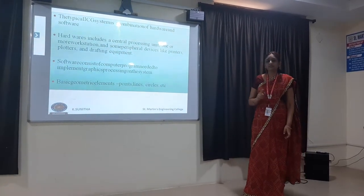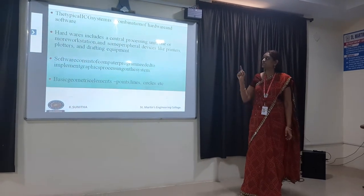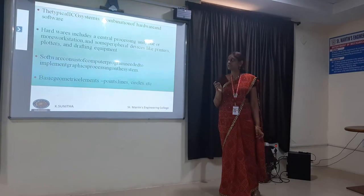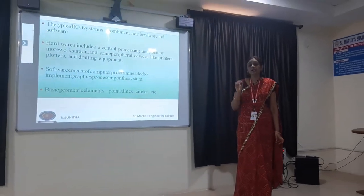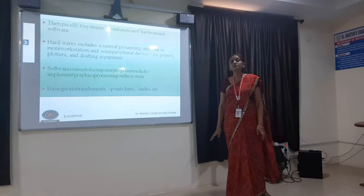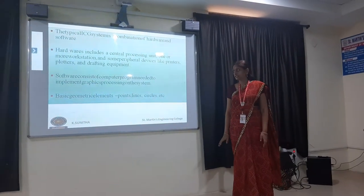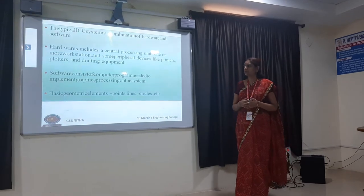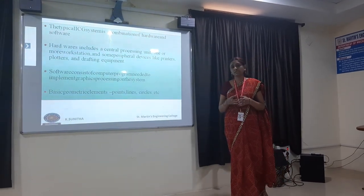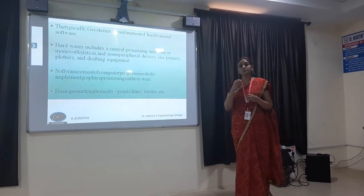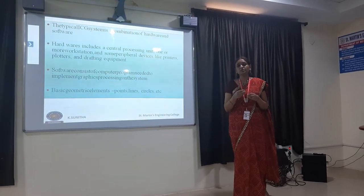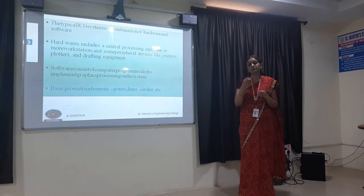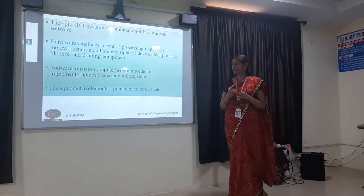The hardware includes the central processing unit, one or more workstations, and also some peripheral devices like printers, plotters and other drafting equipment. Software consists of computer programs to implement graphics processing. We use software like AutoCAD, ProE, ANSYS, CATIA to develop designs by using the computer.